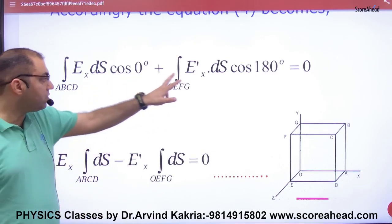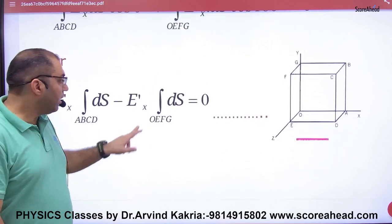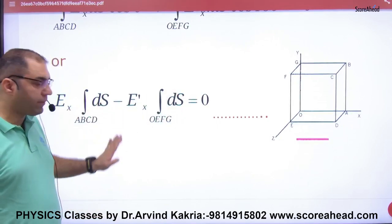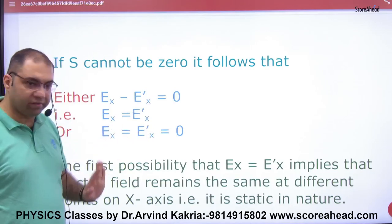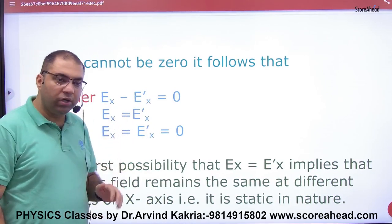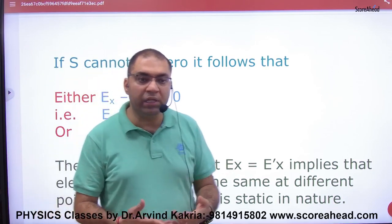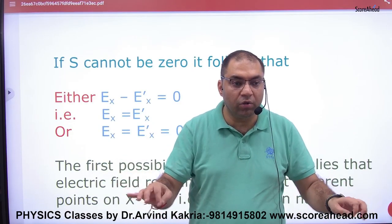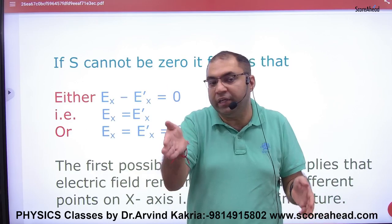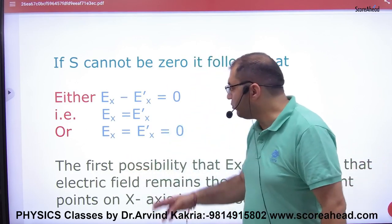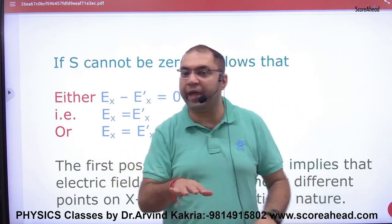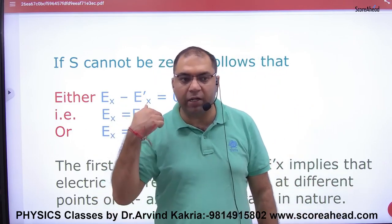So you see cos 0, cos 180 - it is minus one times area. So what is it? Ex minus Ex' is equal to zero. Now for EM wave, the first condition that electric field is constant is not possible. So electric field Ex equals Ex' is not possible. What will it be? Zero. This means electric field cannot exist in that direction.